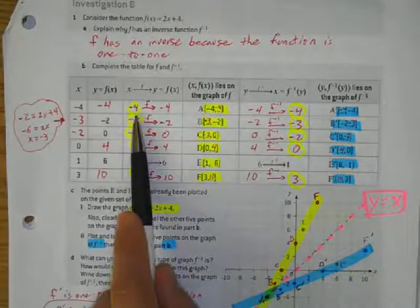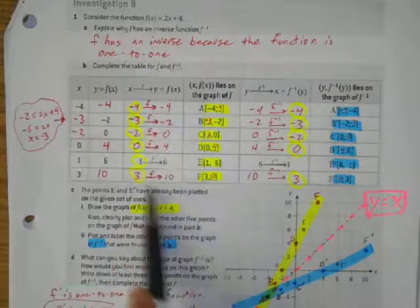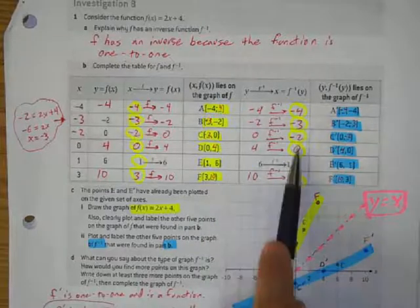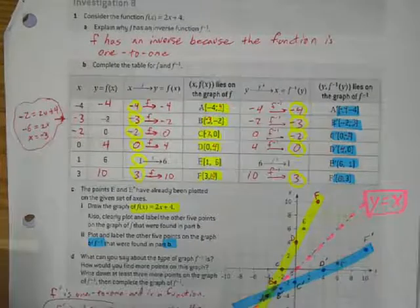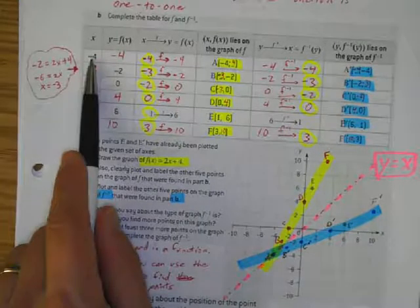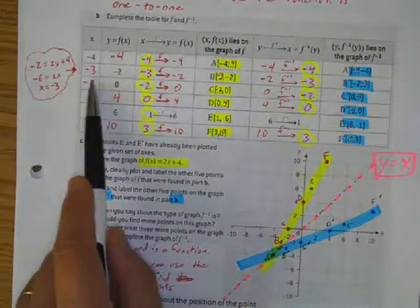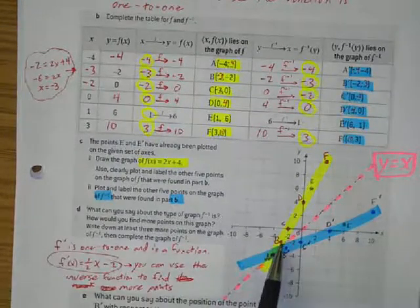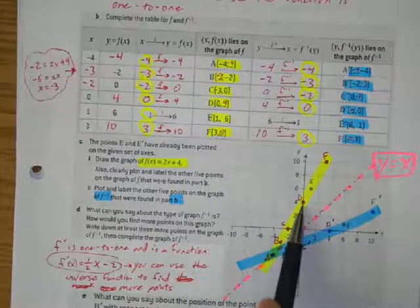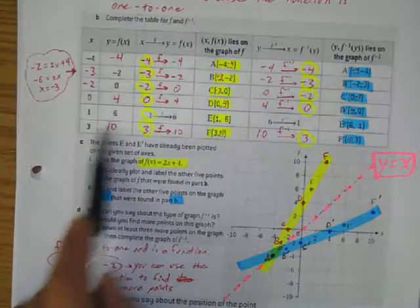Doing the mapping: here's the x value, here's the y value. The coordinates are written out, and the inverse is simply those coordinates written in reverse. I plotted the points — negative 4 comma negative 4, negative 3 comma 2, 0 comma 4 — and all of these points on the yellow line form the f(x) function.